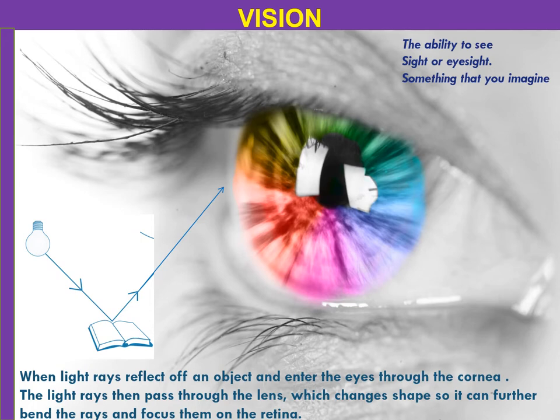Light rays pass through the lens. The lens magnifies the image of the material, changes the shape, and further bends the rays, focusing them on the retina. Finally, the retina collects the details of the material and sends signals to the brain, and our brain gives the perfect shape and further details of the material.